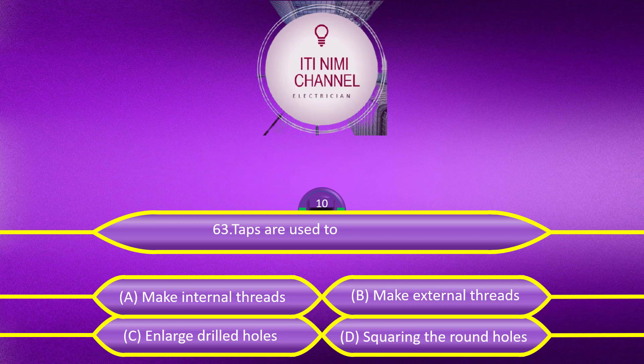Taps are used to: Option A, make internal threads. Option B, make external threads. Option C, enlarge drilled holes. Option D, squaring the round holes.